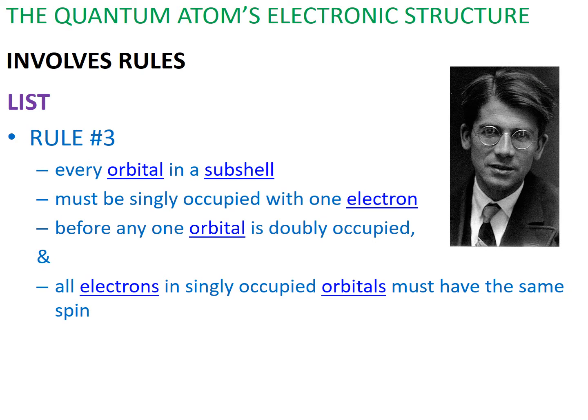And the third contemporary to Erwin Schrödinger was Friedrich Hund, who proposed rule number three, which states, every orbital in a subshell must be singly occupied with one electron before any one orbital is doubly occupied. And all electrons in singly occupied orbitals must have the same spin.